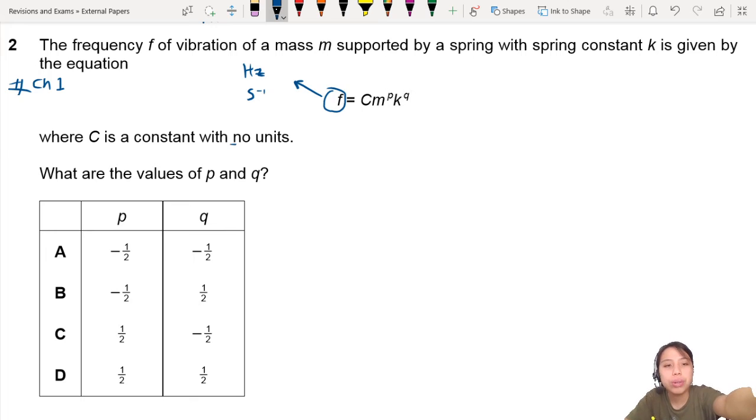m is mass, so that's kg. k is spring constant, so that would be newton per meter.